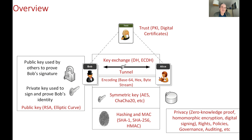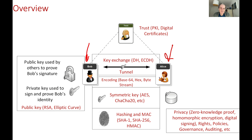This is the infrastructure that we might have. We might have Bob and Alice, and we need to make sure that they can communicate securely and also authenticate to each other if possible. From previous units we found out that we can use key exchange methods such as Diffie-Hellman and Elliptic Curve Diffie-Hellman to be able to create a symmetric key which is then used for the tunnel.